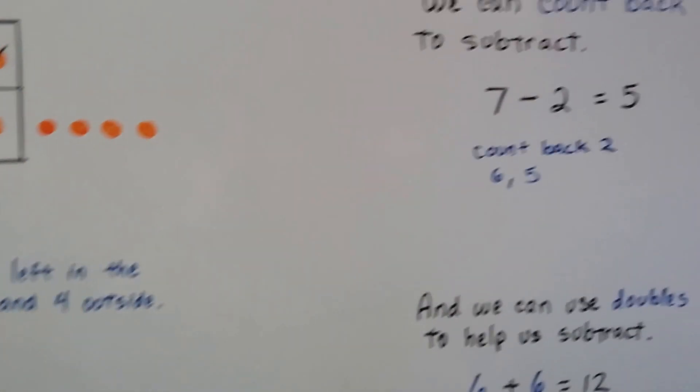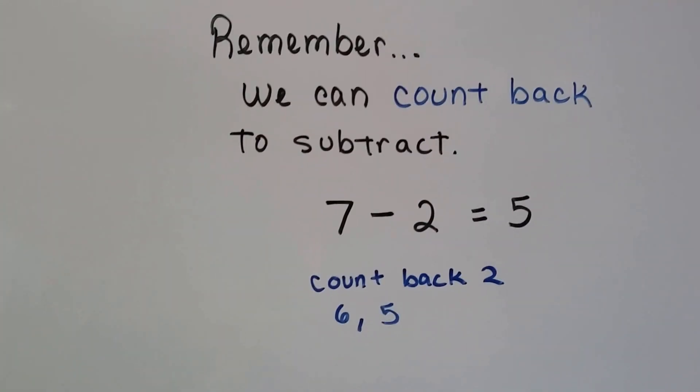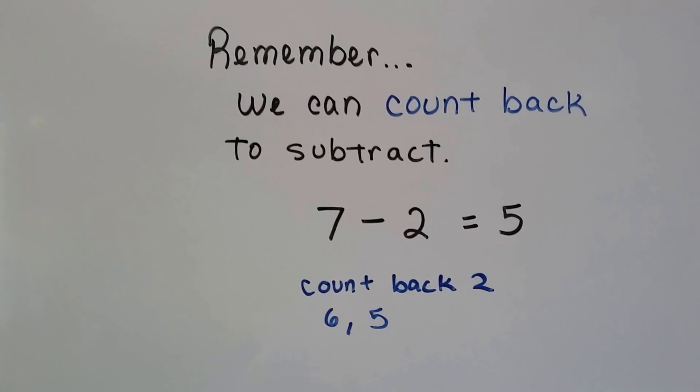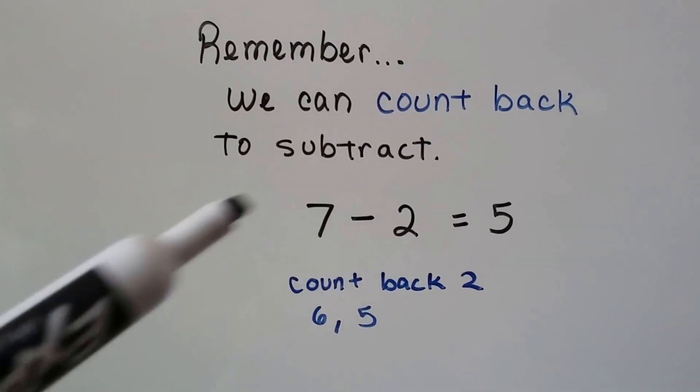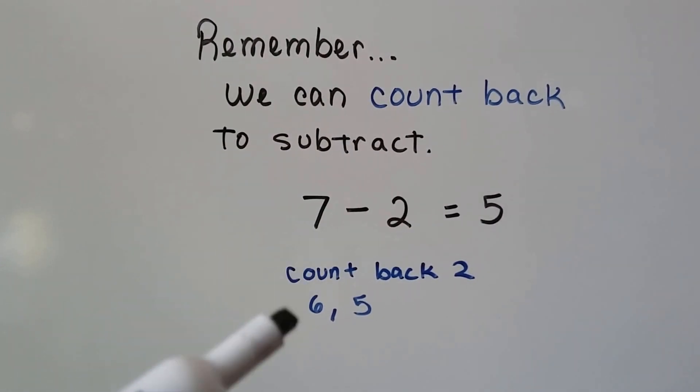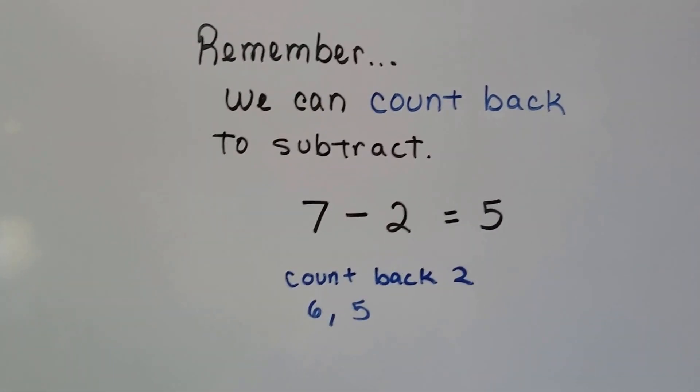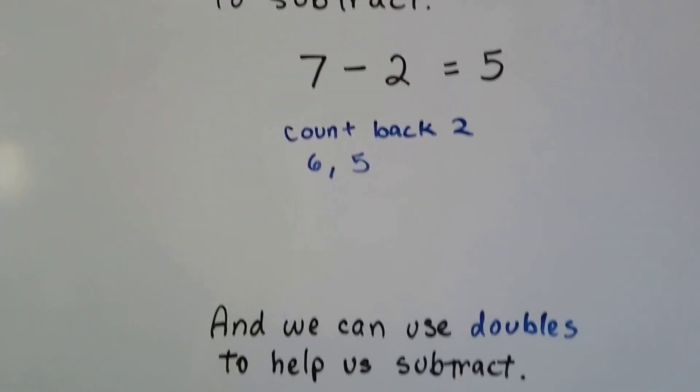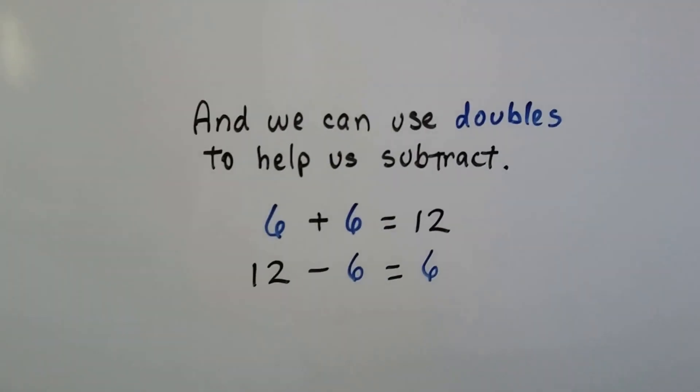Just remember that we can also count back to subtract. We learned about that. 7 minus 2. We count back to 7 and then we go 6, 5. So 7 minus 2 is 5. And also remember that we can use doubles to help us subtract.